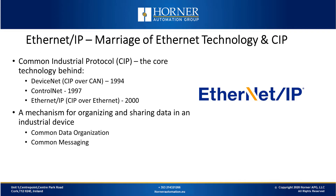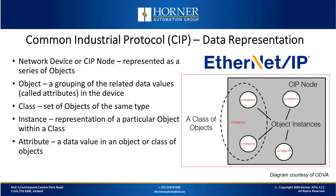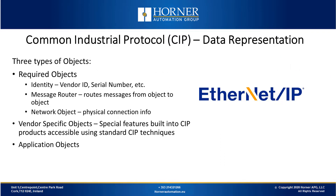CIP is used to organize and share data in an industrial device. It involves common data organization and common messaging. It is object-oriented, so the network device or CIP node is represented as a series of objects. Objects are groupings of related data values in a device or node. A class is a set of objects of the same type. An instance is a representation of a particular object within a class. Attributes are a data value in an object or a class of objects. There are three types of objects: required objects, vendor-specific objects, and application objects.